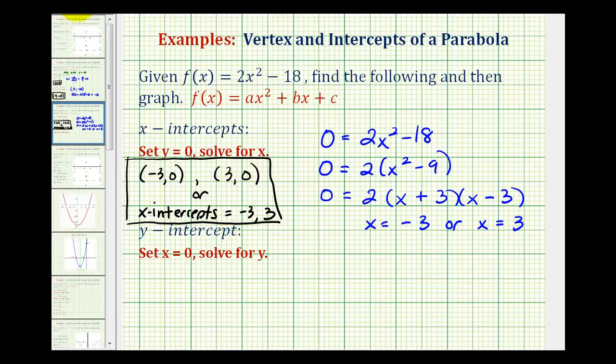For the last part, we want to find the y-intercept. Because every point on the y-axis has an x-coordinate of 0, we set x equal to 0 and solve for y, which we already did when we found the vertex. If we have f of x equals 2x squared minus 18, this is equivalent to y equals 2x squared minus 18. If we replace x with 0, we have negative 18.